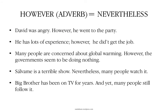You can also express this contrast by means of adverbs such as 'however' or 'nevertheless.' For example: David was angry — that is the problem — however, he went to the party — that is the surprising result. What we've used here is the first sentence, we stop, and after the stop we start a new sentence using the adverb 'however' followed by a comma. 'However' is very useful and tends to appear at the beginning of a new sentence after a full stop.